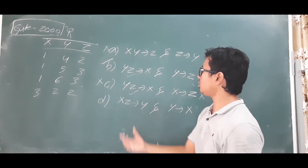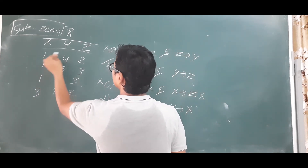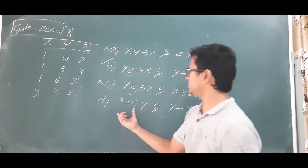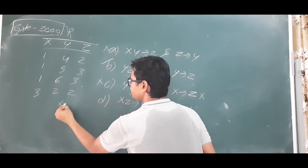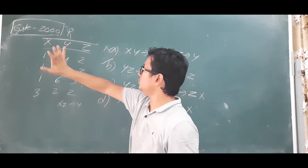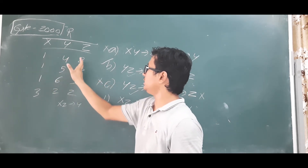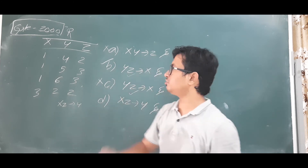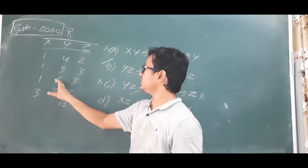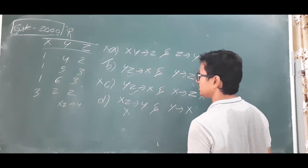Now let's check option D: XZ determines Y. For (X=1, Z=2) it gives Y=4 — is (1,2) repeating? No, single value 4. For (X=1, Z=3) it gives Y=5 in one row and Y=6 in another. Since (1,3) gives two different outputs, XZ determines Y is NOT a valid functional dependency.